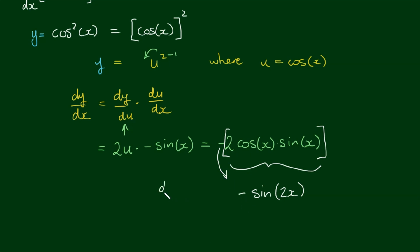So the whole thing — the derivative of cos squared of x — is equal to negative sine of 2x.